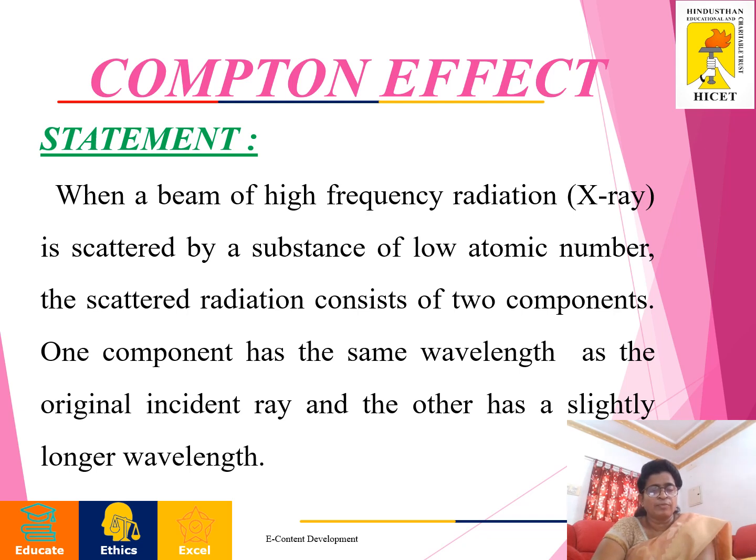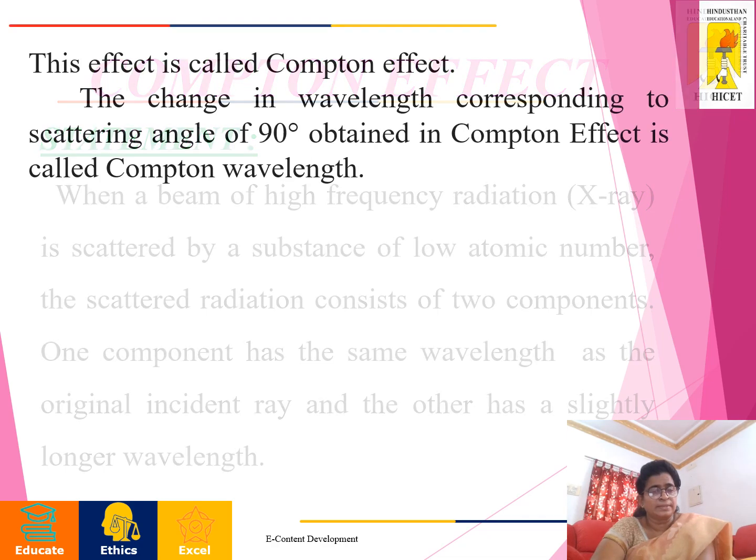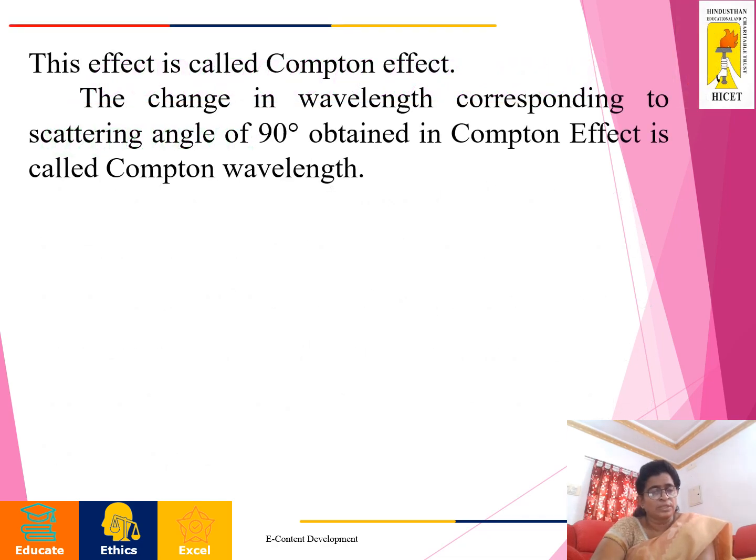Statement: When a beam of high-frequency radiation is scattered by a substance of low atomic number, the scattered radiation consists of two components. One component has the same wavelength as the original incident ray and the other has a slightly longer wavelength. This effect is called the Compton effect.